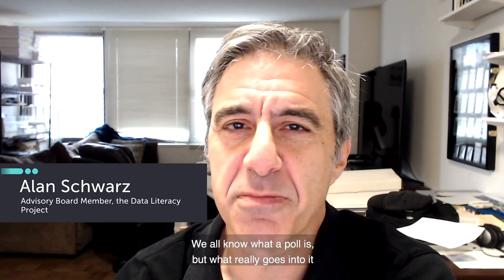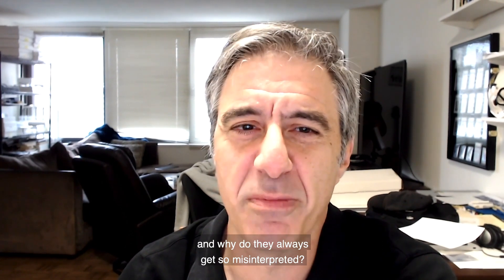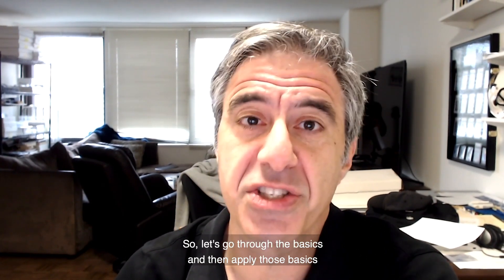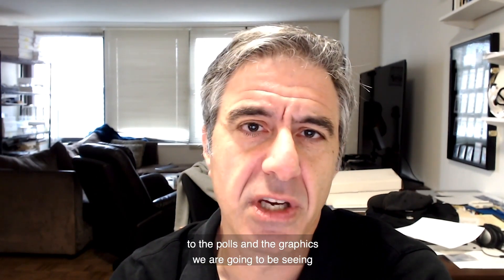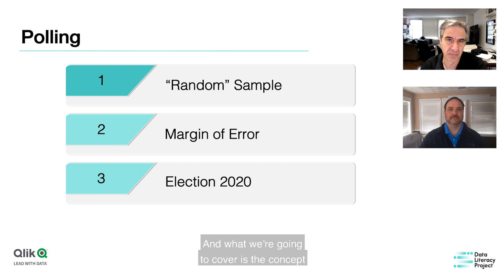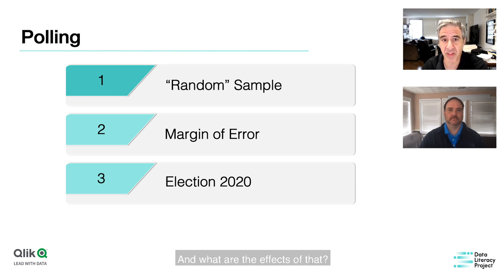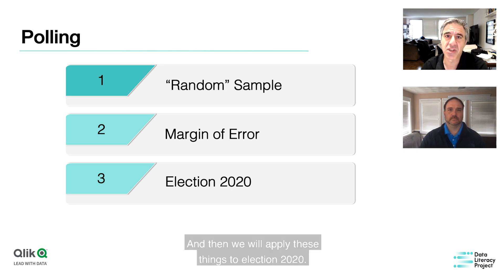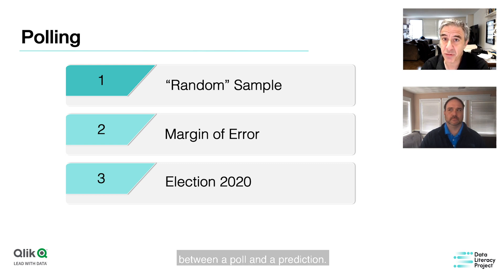We all know what a poll is, but what really goes into it and why do they always get so misinterpreted? We all remember 2016 and how the numbers looked before and after the actual election. We're going to cover the concept of a random sample and why a truly random sample is not possible. We'll look at statistical and methodology margins of error. And an important lesson: there's a big difference between a poll and a prediction.